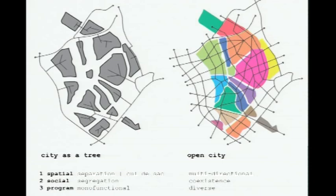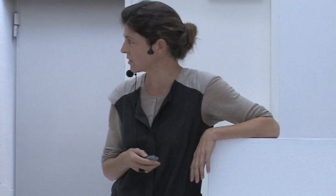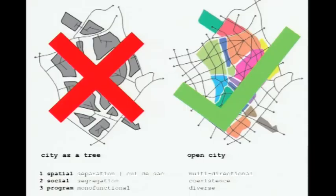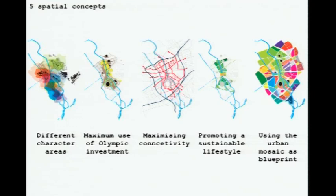There's also the problem of monofunctional program. I also heard you have to deal with outskirts where there are mostly just residential areas and not so much mixed-use program or services. Where we like to focus is really the open city: multi-directional accessibility, co-existence between different kinds of areas, and a very diverse, vibrant, colorful city. This is really the notion where we kind of start all the time.